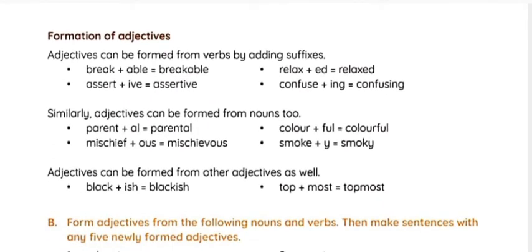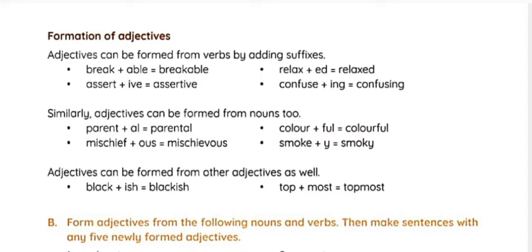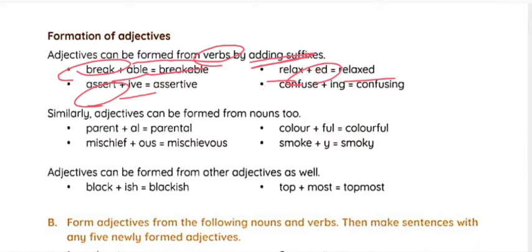Now let's look at topic B — formation of adjectives. Adjectives can be formed from verbs by adding a suffix. For example: 'break' + 'able' = 'breakable'; 'relax' + 'ed' = 'relaxed'; 'assert' + 'ive' = 'assertive'; 'confuse' + 'ing' = 'confusing.' Similarly, adjectives can be formed from nouns: 'parent' + 'al' = 'parental'; 'color' + 'ful' = 'colorful.' We add suffixes to nouns to form adjectives.